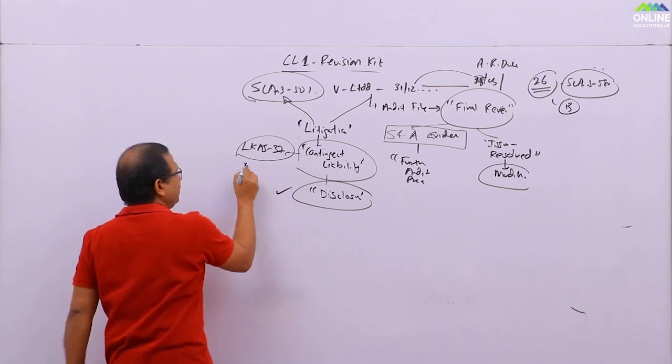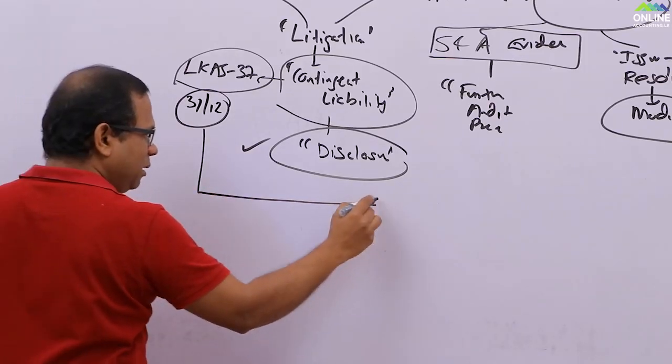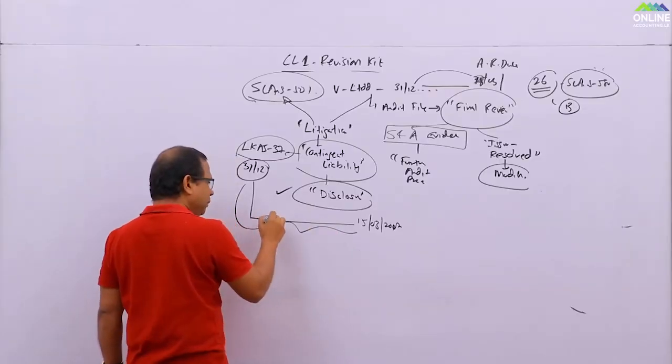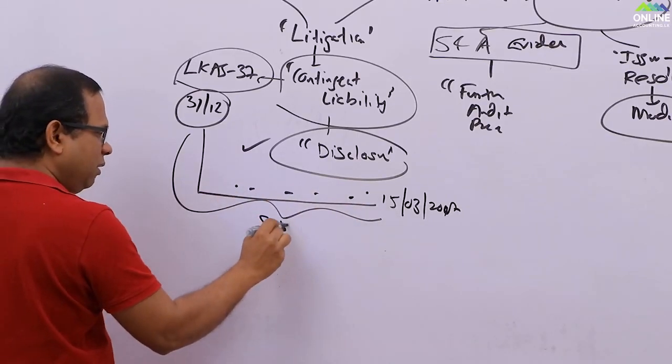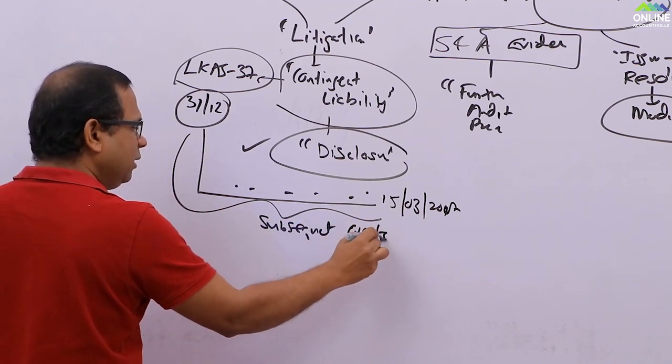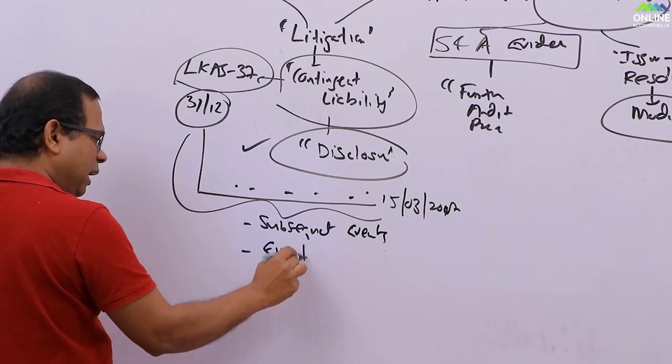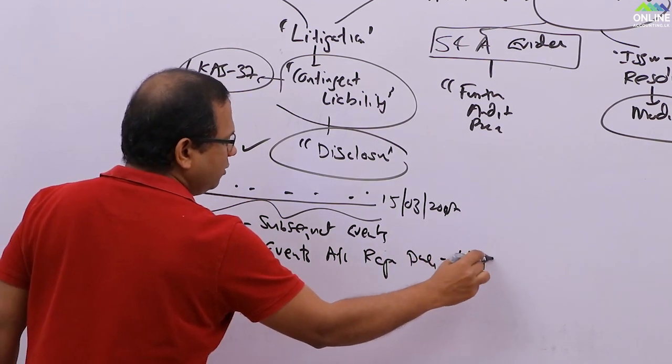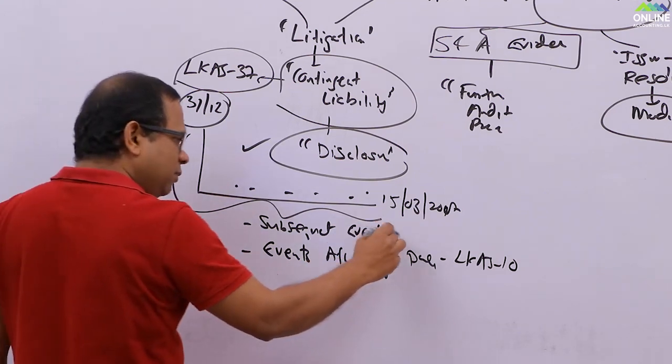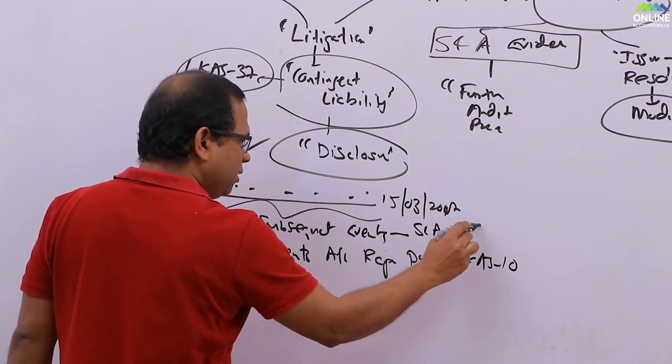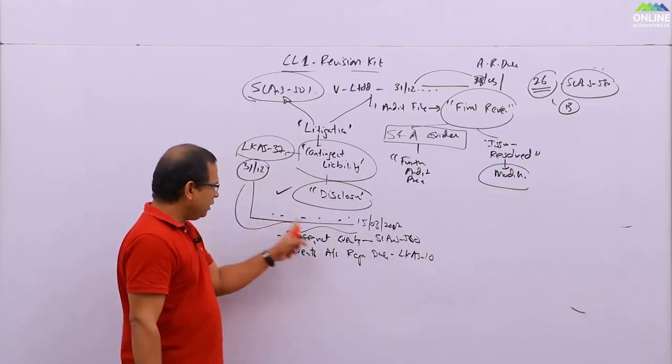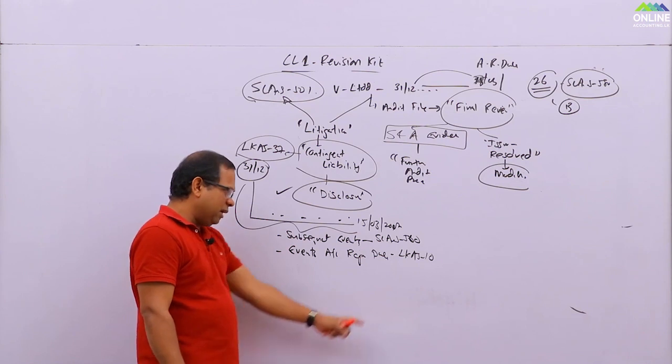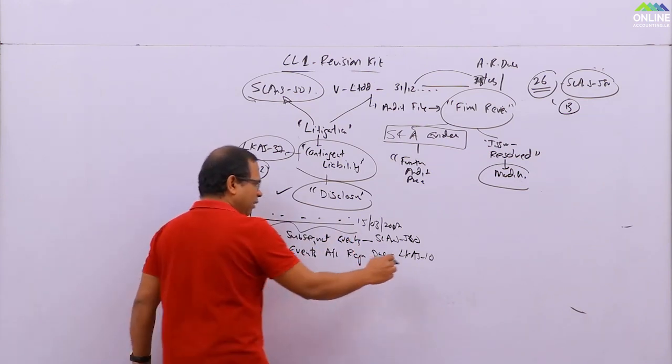You can see here, litigation is there. It was a contingent liability as of 31st December. Now from 31st December till 15th March, this period, anything can happen. So this period, subsequent events. Subsequent events for the auditor, events after the reporting date for the management. So this is LKAS 10, events after the reporting date, subsequent event, SLA US 560. So for the auditor, he also need to be happy, satisfied that everything is okay. As per the events after the reporting date, LKAS 10, management also need to review and management need to decide whether to adjust.